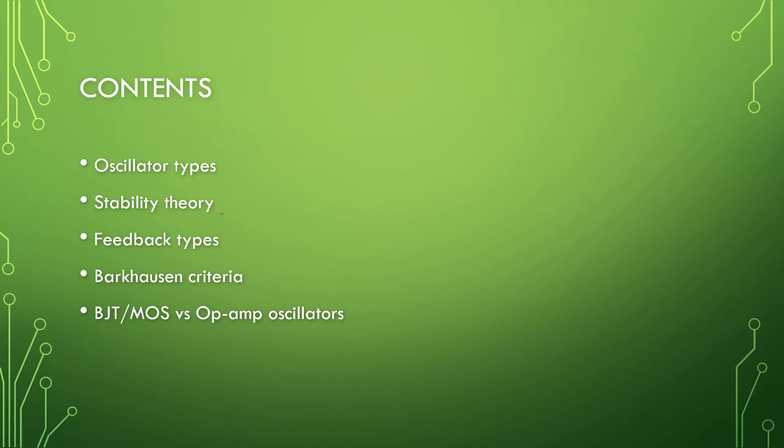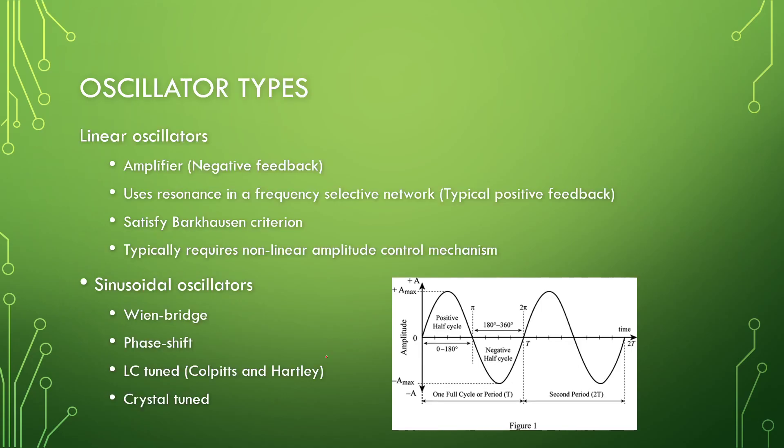We will look at some stability theory in the process of how do we go about creating some oscillators, then feedback types, Barkhausen's criteria for oscillations, and then the difference of selecting BJT or MOS circuits versus op-amps to build your oscillators. So the pros and cons.